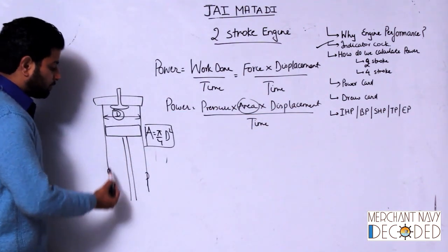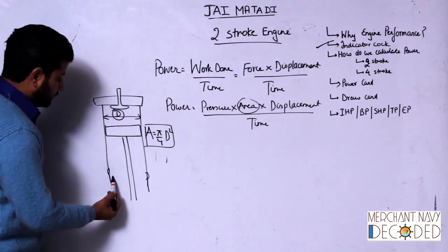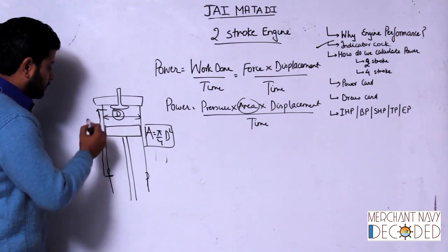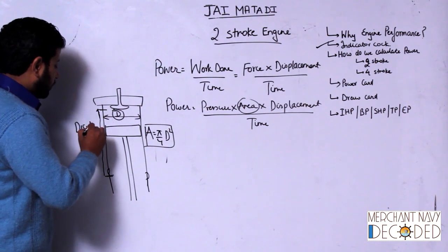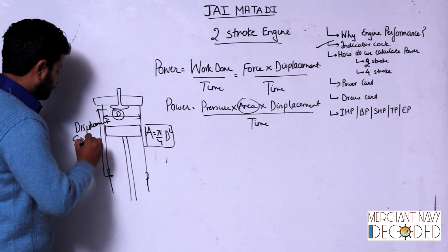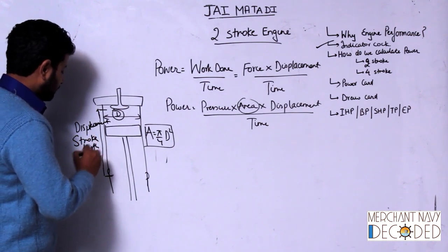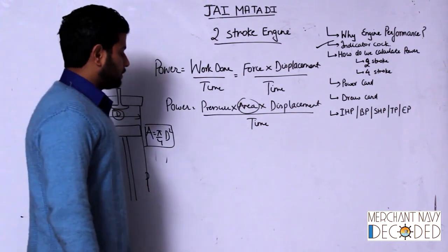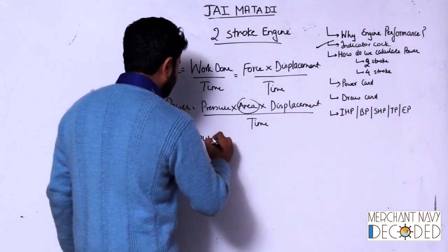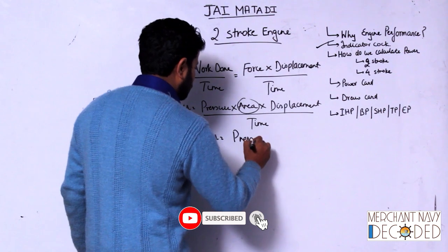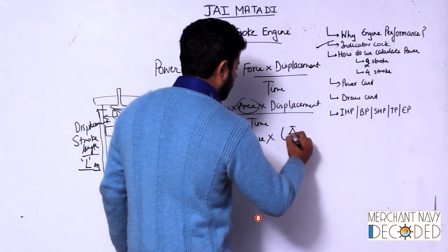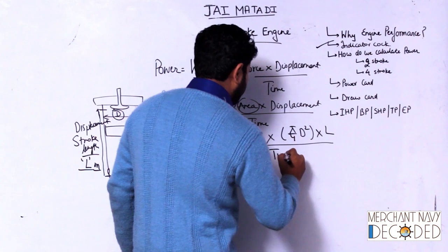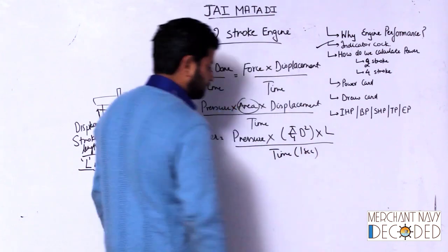Displacement is the distance travelled by the piston from BDC to when it reaches TDC. This is also called stroke length, noted by L in meters. Area is also in meters squared. So power becomes: pressure into area — which is pi by 4 D squared — into L, upon time, say 1 second.